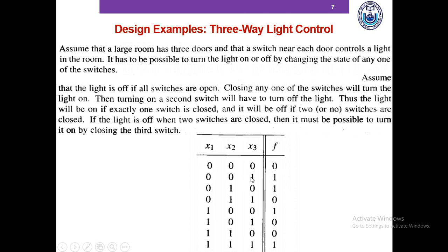When one switch is closed — 0,0,1 or 0,1,0 or 1,0,0 — the light should be on, so f=1 for those rows. When two switches are closed — 0,1,1 or 1,0,1 or 1,1,0 — the light should be off, so f=0. When all three switches are closed (1,1,1), the light is on, f=1. Please pause the video and try to design the circuit using both sum of product and product of sum.